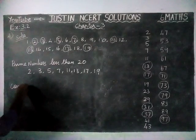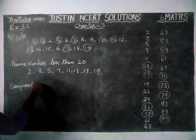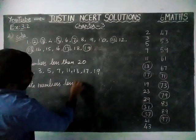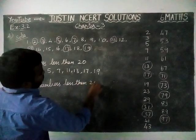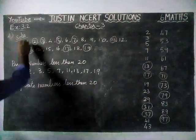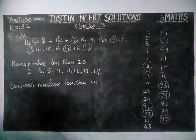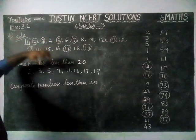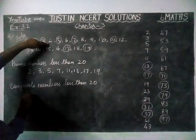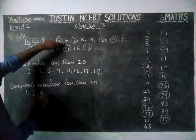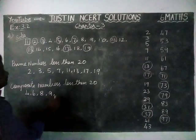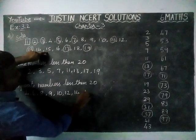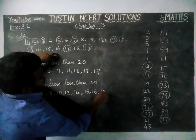Next, composite numbers less than 20. We cannot take the number 1, because 1 is not a prime number and not a composite number. So, except 1, the remaining numbers we have to write: 4, 6, 8, 9, 10, 12, 14, 15, 16, and 18.